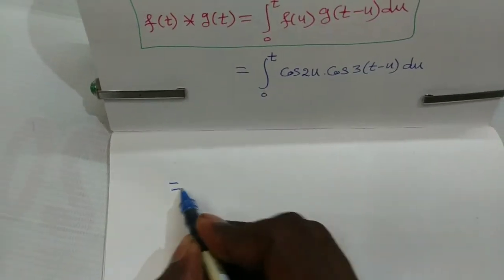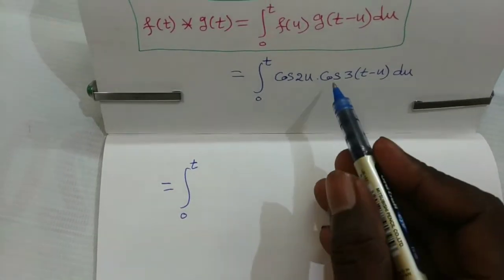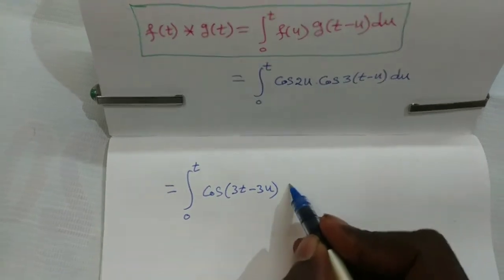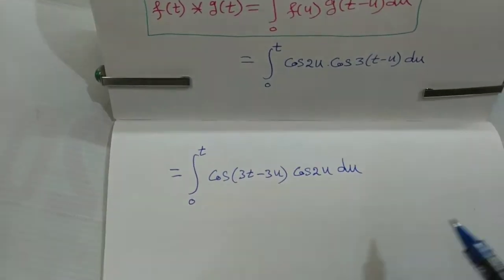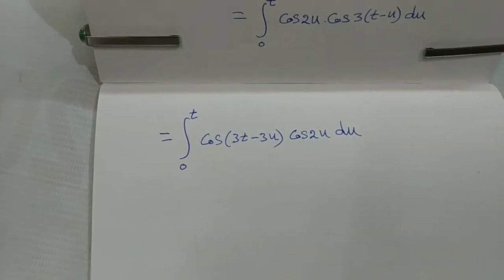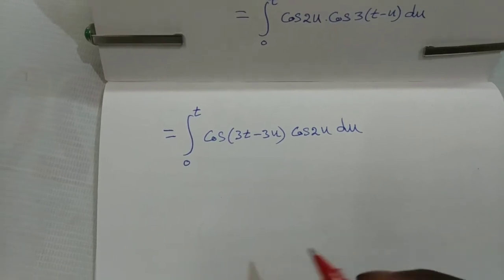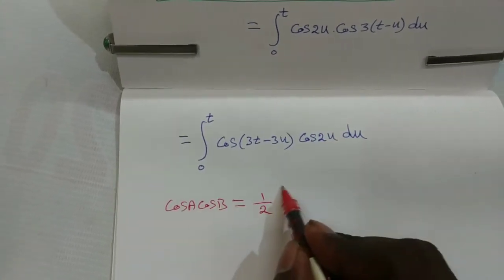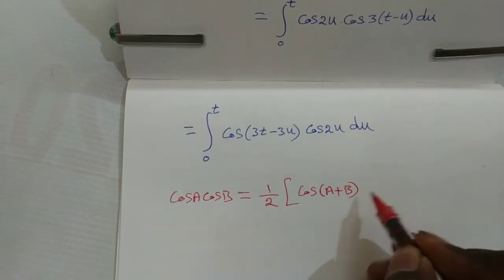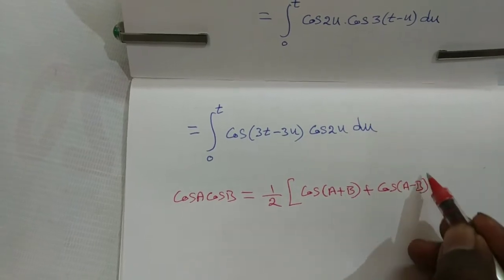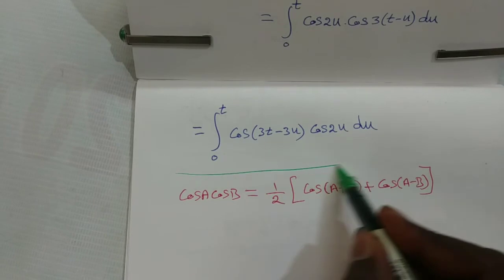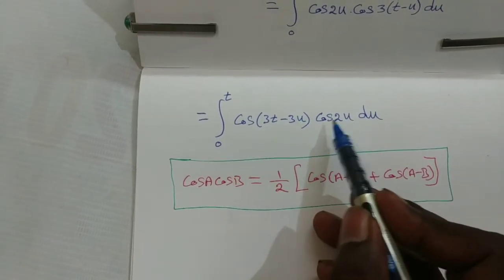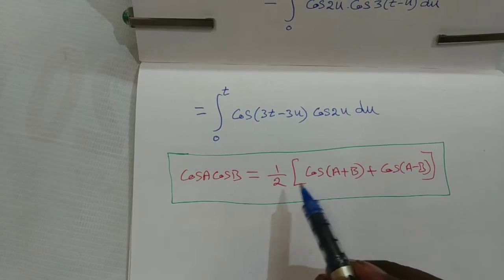This integral is integral from 0 to t of cos(3t minus 3u) into cos(2u) du. To integrate this function we use the cos A cos B formula: cos A cos B equals (1/2)[cos(A+B) plus cos(A minus B)]. So this becomes (1/2) integral from 0 to t, applying cos A plus B plus cos A minus B.